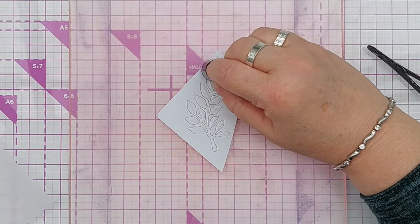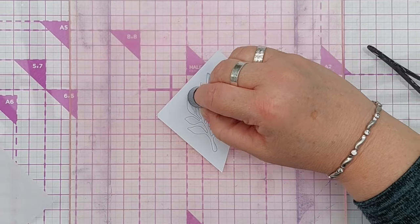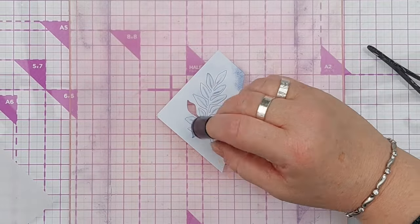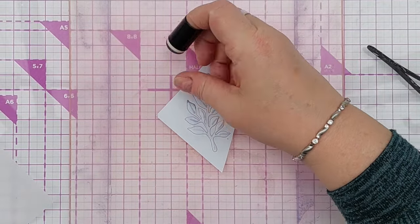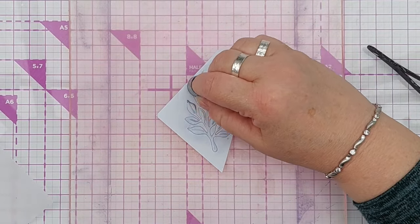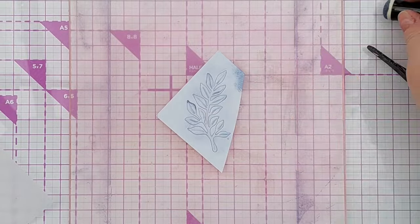For my focal point I die cut a branch out of white cardstock. I then popped it on my grip mat and used a finger dauber to add a light blush of the chipped sapphire, making sure to catch the embossed texture.